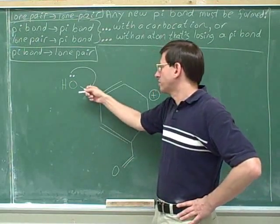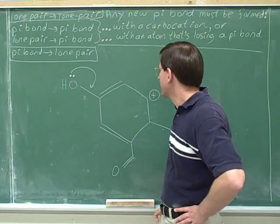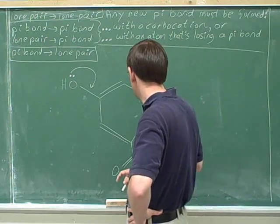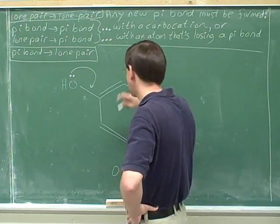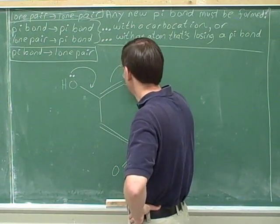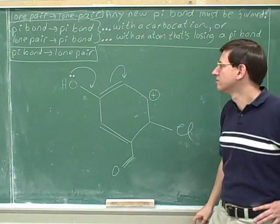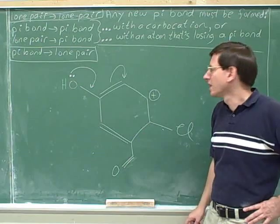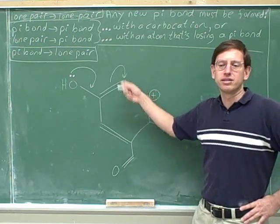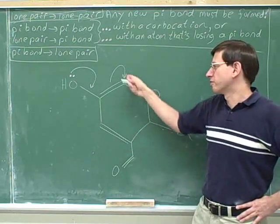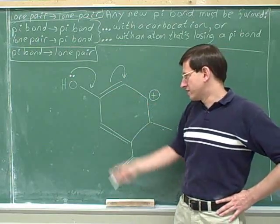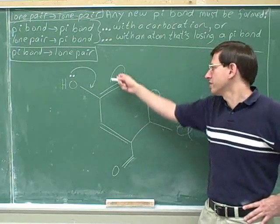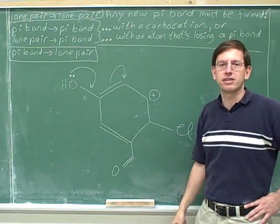What can we do to make room for this pi bond? To make room, we might try moving this pi bond. One thing we might do is form a lone pair — that's fine because we never exceed the octet when we form a lone pair. So this would be a good way to make room for this pi bond. Now this carbon would be gaining a pi bond and losing a pi bond, so this arrow would save the day.